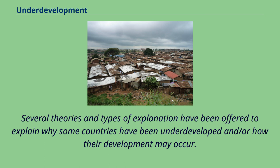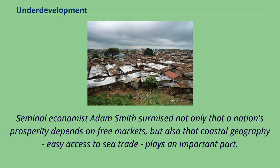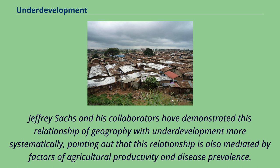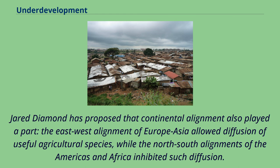Several theories and types of explanation have been offered to explain why some countries have been underdeveloped and how their development may occur. Seminal economist Adam Smith surmised that a nation's prosperity depends on free markets, and that coastal geography and easy access to sea trade plays an important part. Compared with Europe, large proportions of Africa, Asia, and the Americas are far from the ocean. Jeffrey Sachs and his collaborators demonstrated this relationship of geography with underdevelopment more systematically, noting that it is also mediated by factors of agricultural productivity and disease prevalence. Jared Diamond proposed that continental alignment also played a part — the east-west alignment of Europe and Asia allowed diffusion of useful agricultural species, while the north-south alignments of the Americas and Africa inhibited such diffusion.